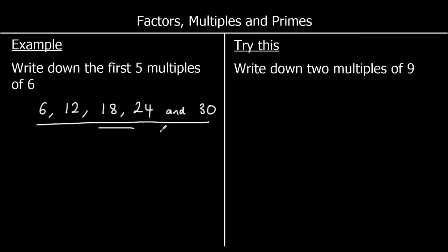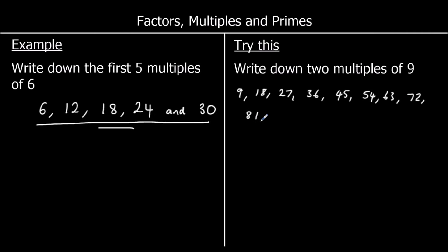Here's a question for you to try. Write down any 2 multiples of 9. Pause the video and give it a go. The multiples of 9 are the numbers in the 9 times table, so you could write down any 2 numbers from it: 9, 18, 27, 36, 45, 54, 63, 72, 81, 90, and so on. Any 2 numbers from the 9 times table would be right.